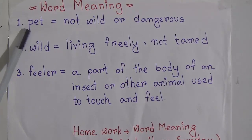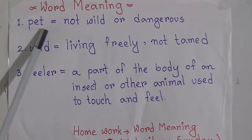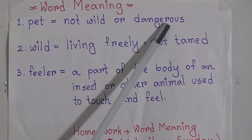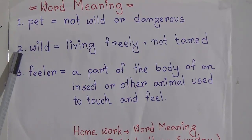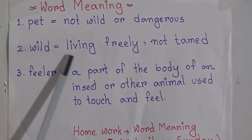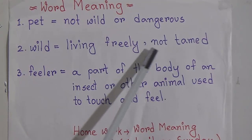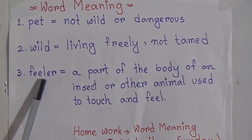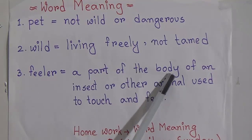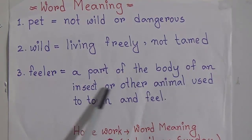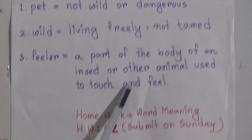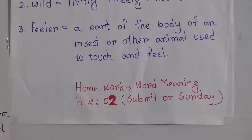I have given three word meanings from the chapter. The first word meaning is 'pet' — meaning not wild or dangerous. The second word meaning is 'wild' — meaning living freely, not tamed. The third word meaning is 'feeler' — a part of the body of an insect or other animal used to touch and feel.